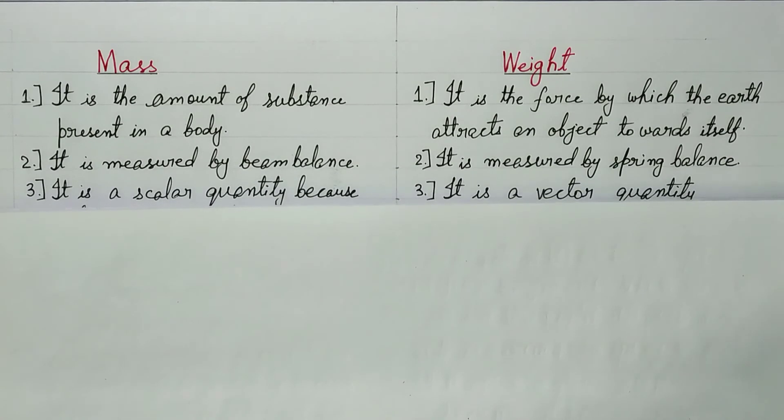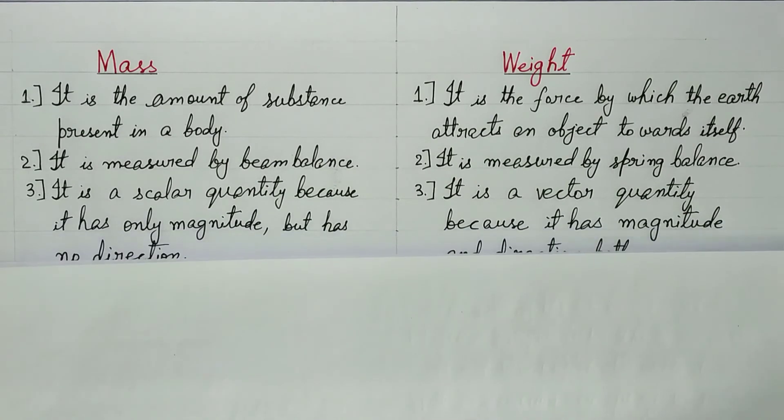Third difference. Mass is a scalar quantity because it has only magnitude but has no direction. Weight is a vector quantity because it has magnitude and direction both.